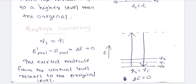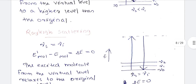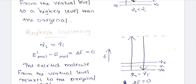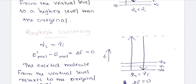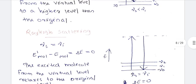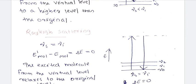We are talking about group frequencies. This chemical bond in a certain chemical molecule — certain chemical bonds may show frequencies which are almost independent of the rest of the molecule. That frequency is called group frequencies, and group frequencies relate to Raman spectroscopy.